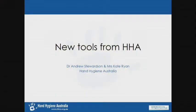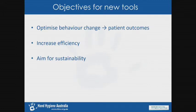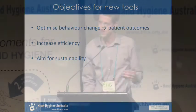This is a pretty practical presentation about a couple of new tools that we've developed at Hand Hygiene Australia, which hopefully you'll find useful and will be released over the next few weeks. The aims for these two new tools are, firstly, to optimise the effectiveness of the data that you're collecting, and of the programme, and to improve patient outcomes — that's the main aim of the whole programme — to increase efficiency by saving time, and to aim towards sustainability over the coming years.